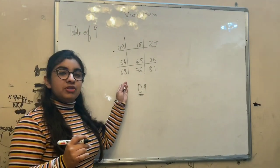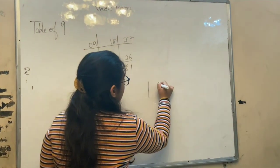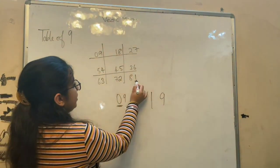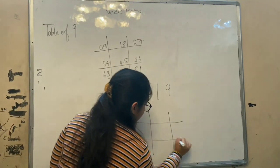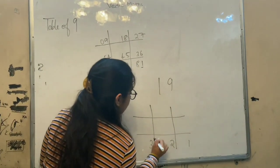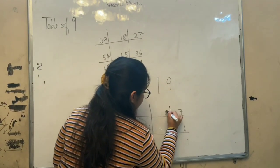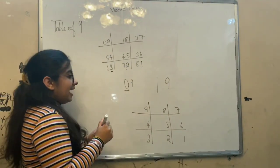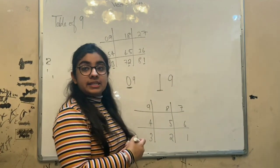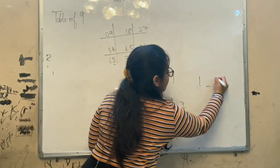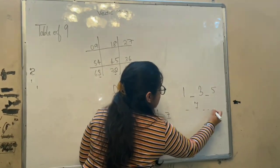To do the table of 19, we are going to make the same grid and write the same initial values like we wrote before: 1, 2, 3, 4, 5, 6, 7, 8, 9. Now, the thing is that 19 has a 1 ahead of 9, which means we have to skip one number — like 1, skip 2, write 3, skip 4, write 5, skip 6, write 7, and so on.